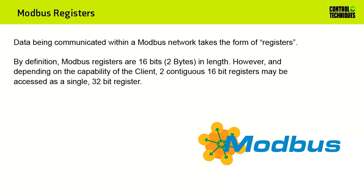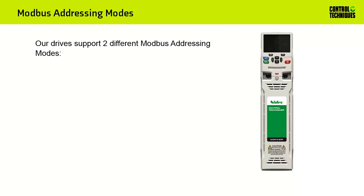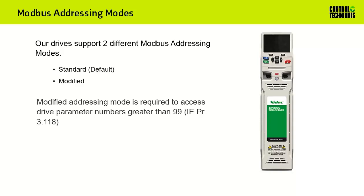By definition, Modbus registers are 16 bits in length. However, depending on the capability of the Modbus client, two contiguous 16-bit registers may be accessed as a single 32-bit register. Our drives support two different Modbus addressing modes: Standard mode, which is the default, and Modified mode. Modified addressing is required to access drive parameter numbers greater than parameter number 99.